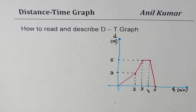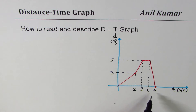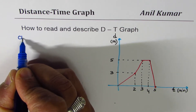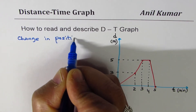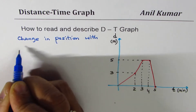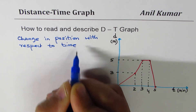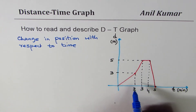That's the small story we just created. As you can see, the distance-time graph gives you an idea of how distance is changing with respect to time. What you really read from the graph is the change in position with respect to time.